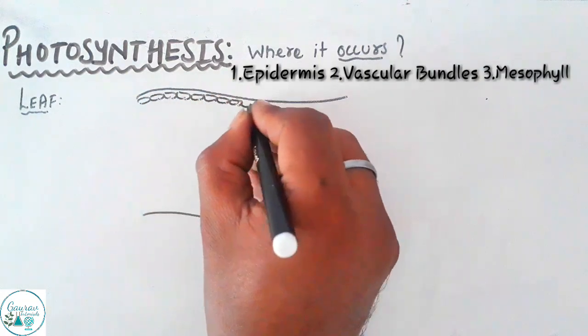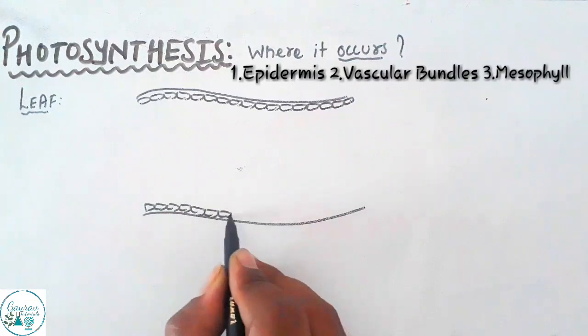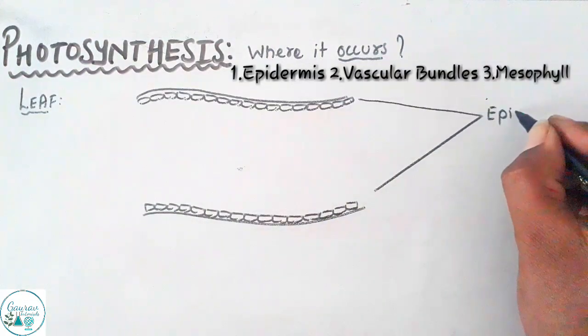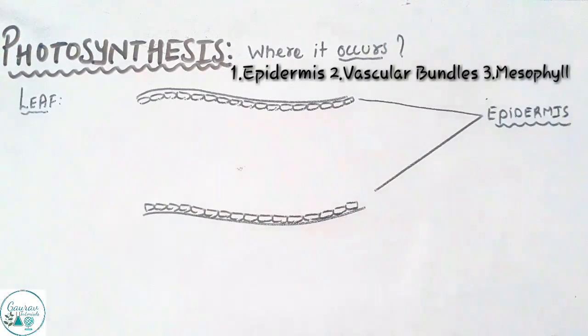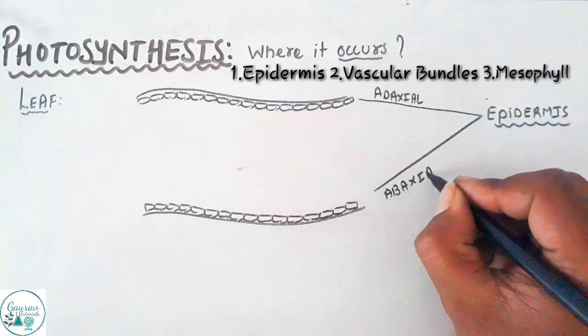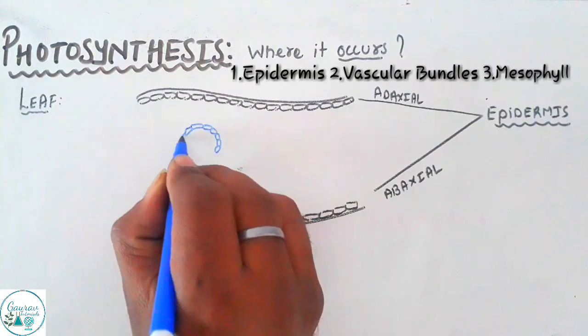In this video we would discuss about leaf. Leaf basically has three parts: epidermis, vascular bundles, and mesophyll. The outermost covering of the leaf is referred to as epidermis. The upper part is referred to as adaxial epidermis whereas the lower part is referred to as abaxial epidermis.